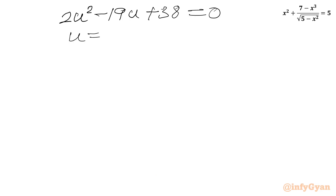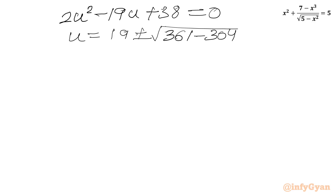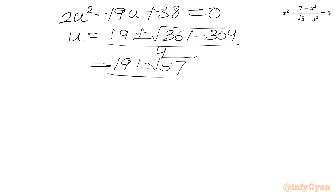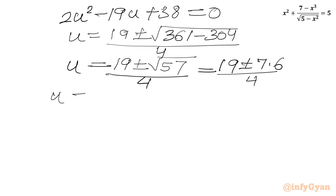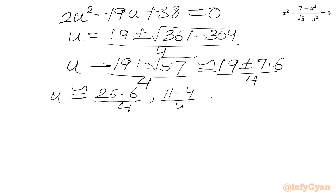Putting approximate values, √57 ≈ 7.6, so u ≈ (19 + 7.6)/4 ≈ 6.6 and u ≈ (19 − 7.6)/4 ≈ 2.8.